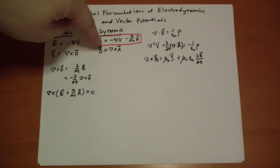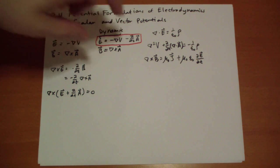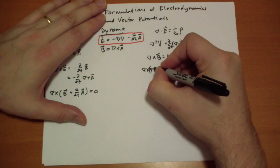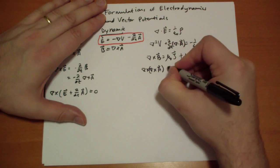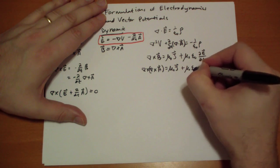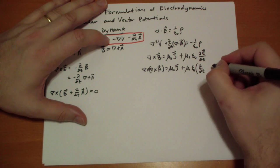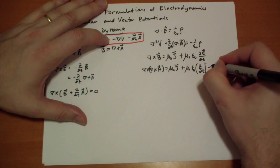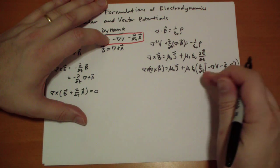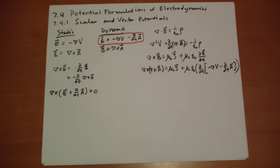And so if we plug in for B, the curl of A, and for E, the negative gradient of V and the time derivative of A, we can collect the terms here. So we're going to get the double curl of the A vector is equal to mu-naught j, plus mu-naught epsilon-naught time derivative of, negative the gradient of V, negative the time derivative of A vector. So this time derivative is going to apply twice here for the A vector. It's going to be the acceleration, basically, of the A field.